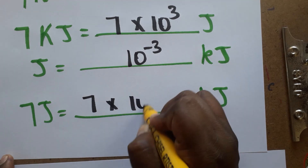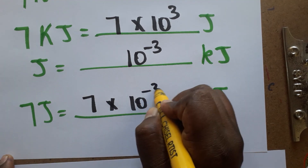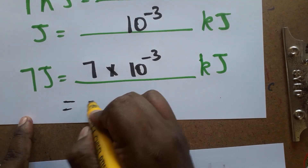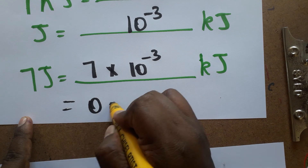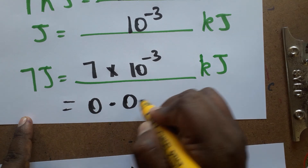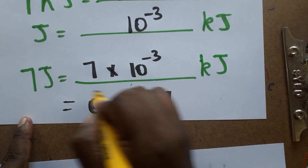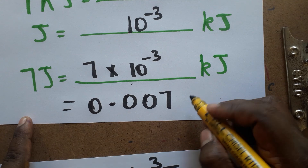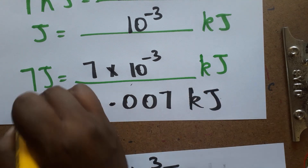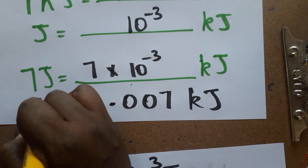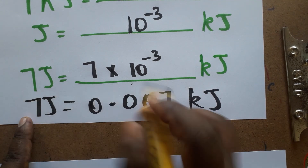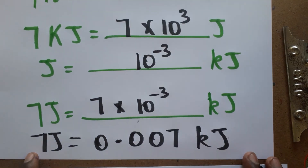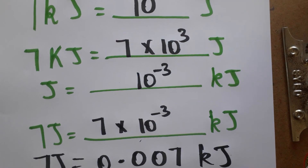So 7 joules is equal to 7 into 10 power minus 3 kilojoules, which we can also write as 0.007 kilojoules — the decimal moves three places because of the negative power. Thank you for watching. If you like my channel, please subscribe.